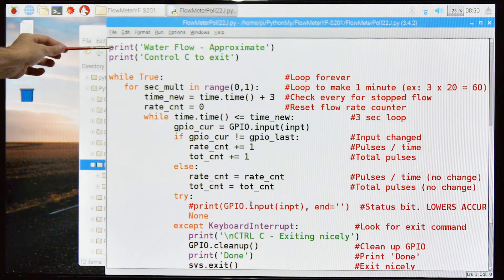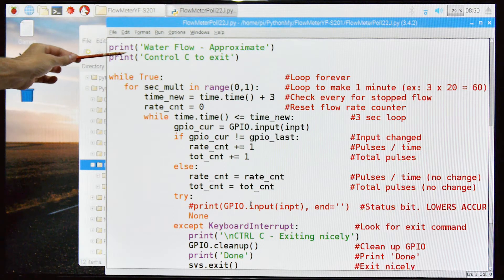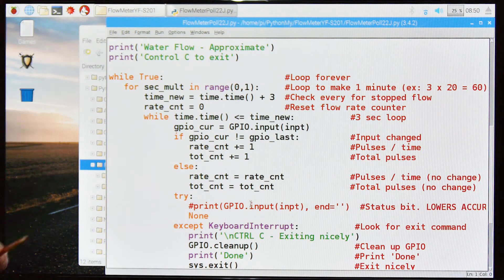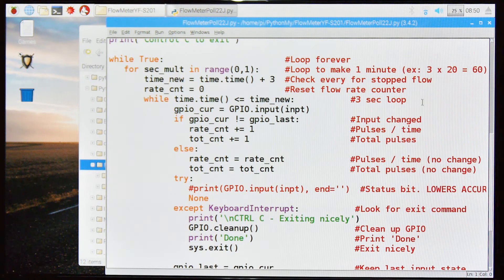This prints out a header. When we start the program, it will print out water flow approximate and then control C to exit. The control C to exit is okay. I'll tell you about that in a second. It's not as smooth as I would like.